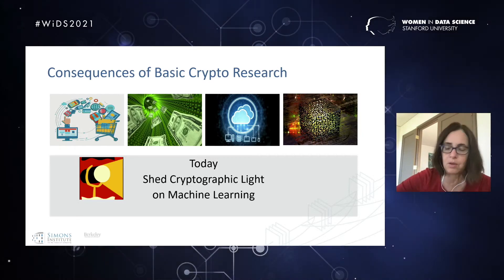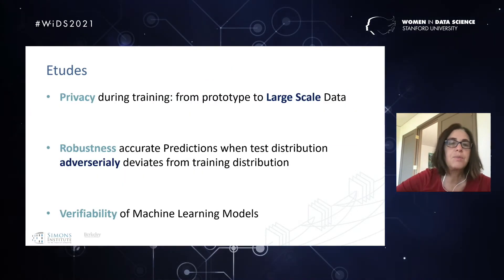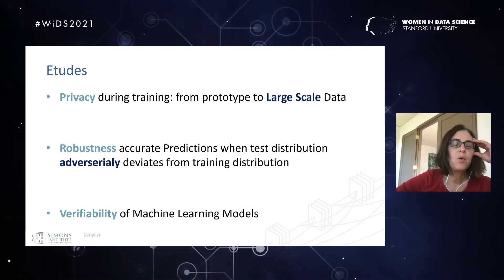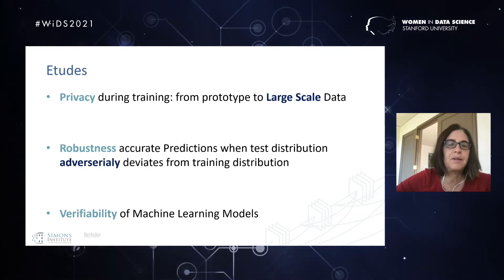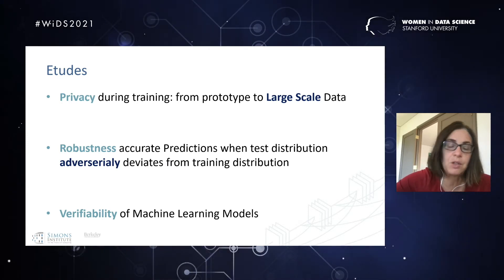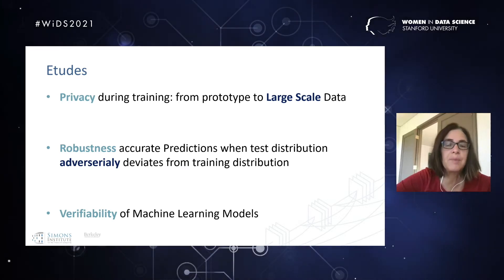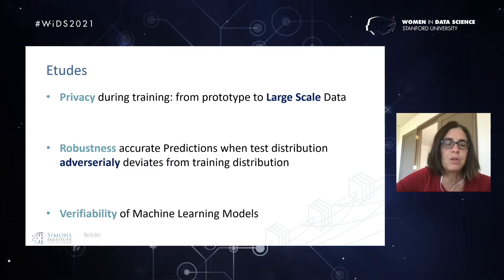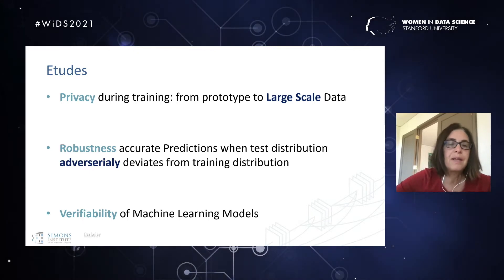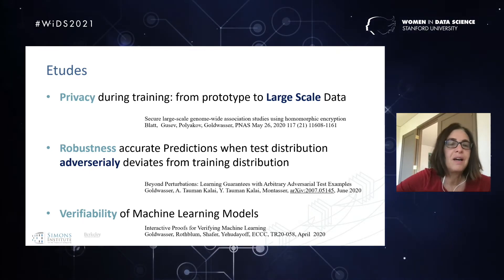Today I want to talk about how cryptography can shed light on machine learning. I'm going to cover three different areas where cryptography is relevant. The first is obtaining privacy while training a machine learning model. There's been a lot of work building prototypes that guarantee privacy of inputs and of the model, but the big challenge is how to make things operate at large scale.